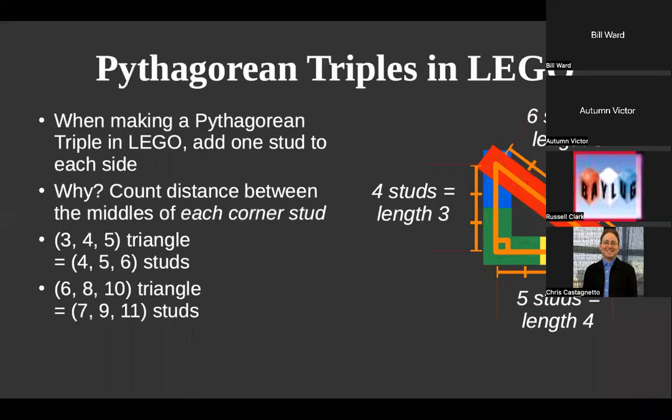How do you use this in LEGO? If you want to do a 3-4-5 in LEGO, you actually want to do a 4-5-6 instead, because the measurement is from the center of the studs — that's where the pivoting happens. If you superimpose an orange triangle on the bricks, the distance between stud centers is 3, 4, and 5, but the length of the parts needed is 4, 5, 6. Basically, take the desired Pythagorean triangle and add one to each side.